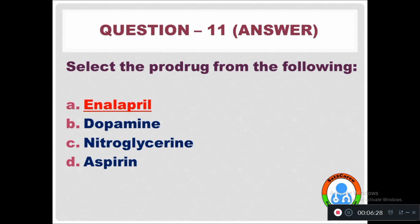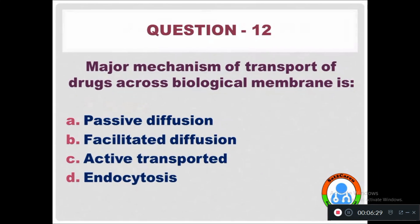Question 12: The major mechanism of transport of drugs across a biological membrane is Option A: Passive diffusion.